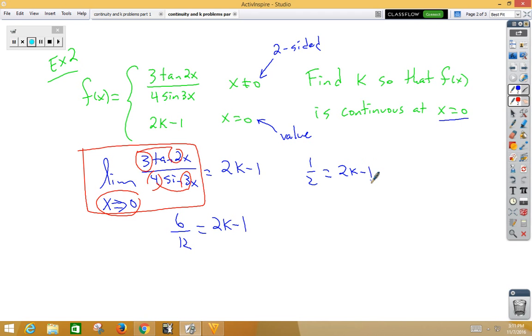Now, some of you really don't like fractions. Well, if you really don't like fractions, go ahead and kill it off. Just multiply both sides by a 2. Then we get 1 is 4k minus 2. 4k is 3, k is 3 fourths. Just get rid of the fractions if you don't like them.